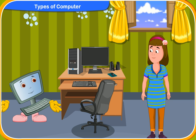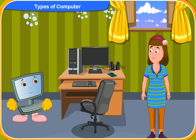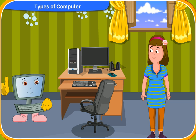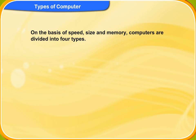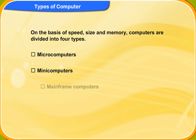What type of computer is my desktop computer? It is a microcomputer and so is a digital computer. Now, on the basis of speed, size, and memory, computers are divided into four types: microcomputers, minicomputers, mainframe computers, and supercomputers. Let us now learn about each of them.